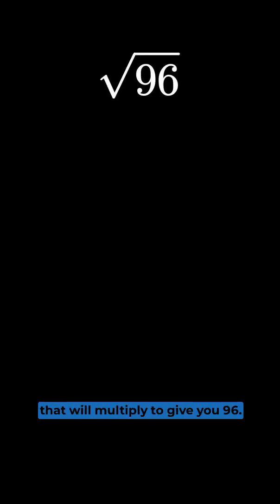So to start with, you want to find two numbers that will multiply and give you 96. It doesn't matter which ones you select. So in this case, we're going to do 12 and 8, and then we'll keep breaking down the numbers.